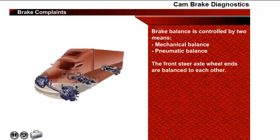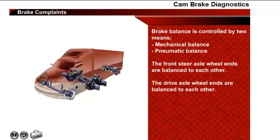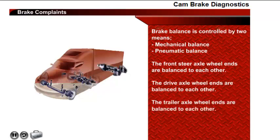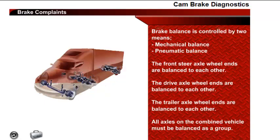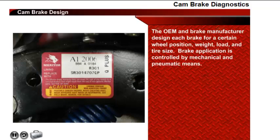The front steer axle wheel ends are balanced to each other. The drive axle wheel ends are balanced to each other. And finally, all of the axles on the combined vehicle must be balanced as a group. The OEM and brake manufacturer design each brake for a certain wheel position, weight, load, and tire size.